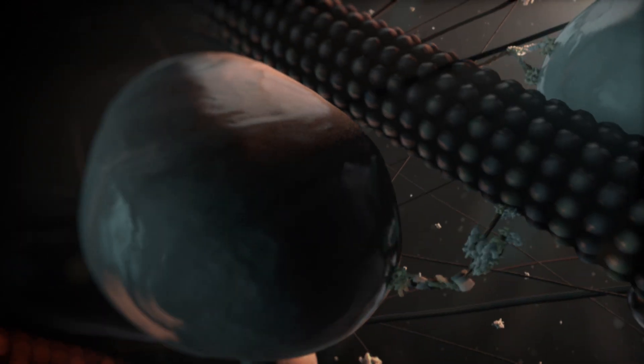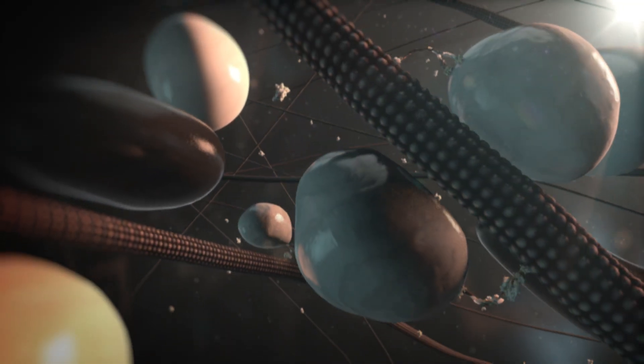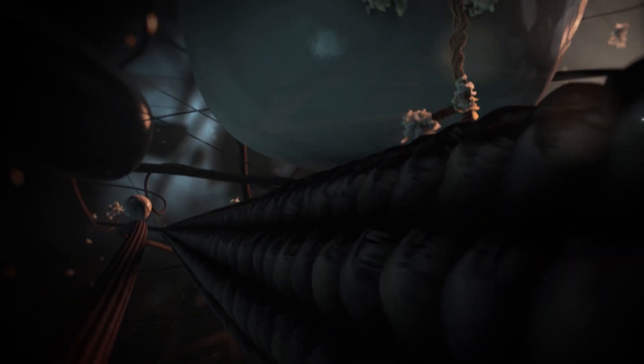Kinesin and dynein move in opposite directions. Dynein moves towards the minus-end, whereas most kinesins move towards the plus-end. Therefore, the orientation of the microtubules helps to direct polarized transport.